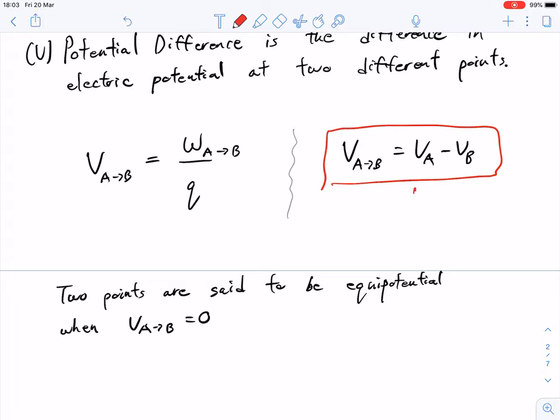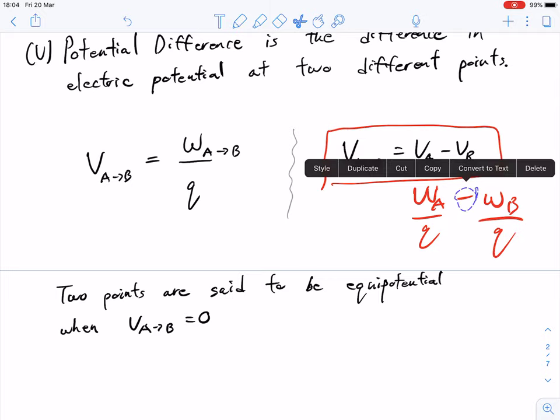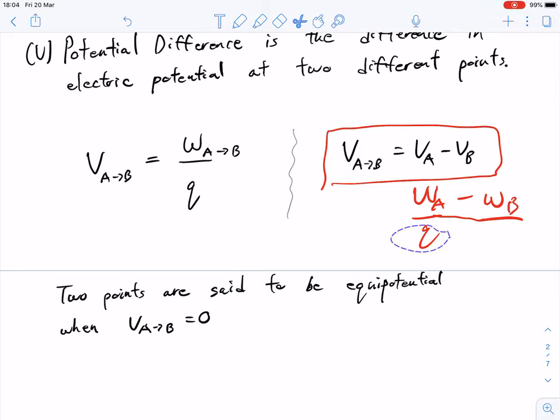And so we could talk about the work at A minus the work from B per unit charge. And we can combine these guys together like this. And that's essentially what we have over here.